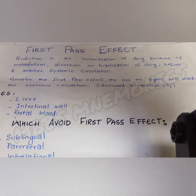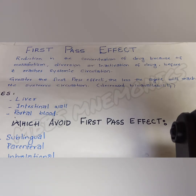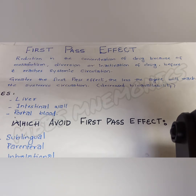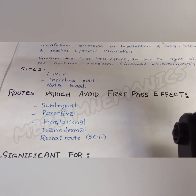Greater the first pass effect, the lesser the drug will reach the systemic circulation, decreasing bioavailability and reducing the therapeutic effect. The main sites for the first pass effect are the liver, which is the most important, followed by the intestinal wall and the portal blood.